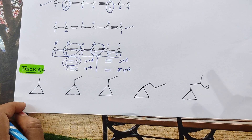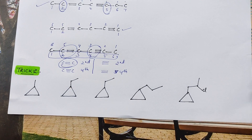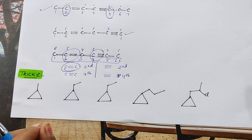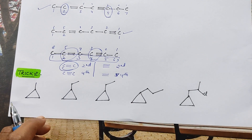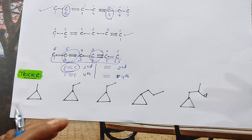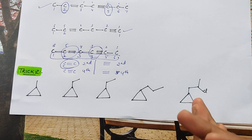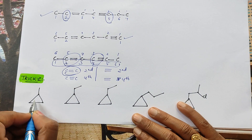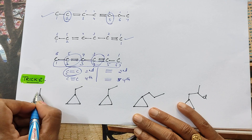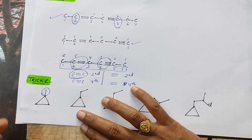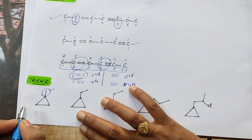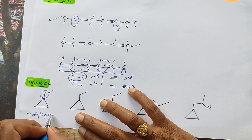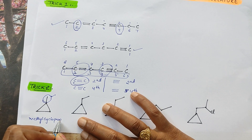Coming to trick number 2. Here, I want to give you clarity regarding when a ring is there and a normal chain is there — which one is the side chain and which one is the parent chain. Here, the ring is having 3 carbons and the side chain is having only 1 carbon. So this is a side chain. Its name will be methylcyclopropane. Here, 2 carbons are there, so its name is ethylcyclopropane.